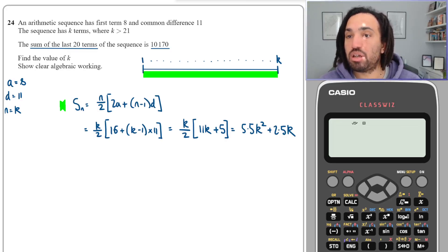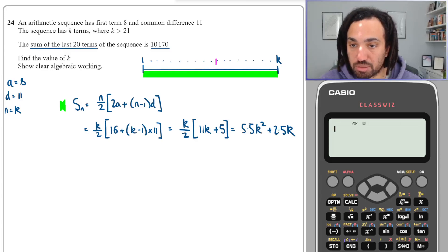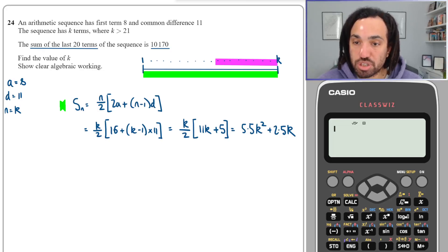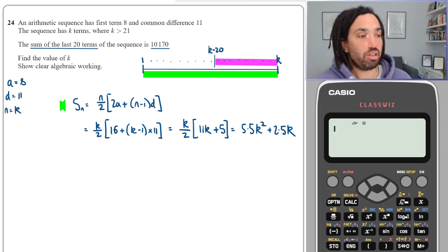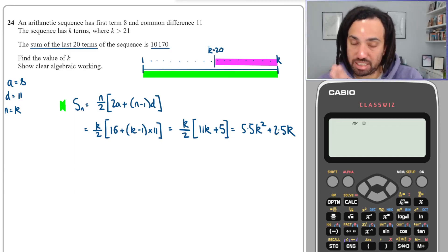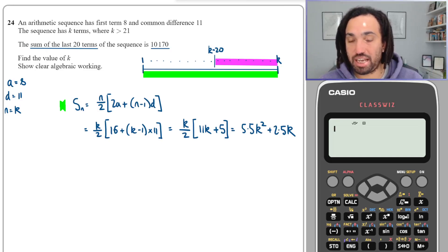We want the final 20 terms. So let's imagine that the final 20 terms look something like this: that would start here at the term k minus 20, and then it would go k minus 19, k minus 18, k minus 17, all the way up to k. So those would be the final 20 terms.